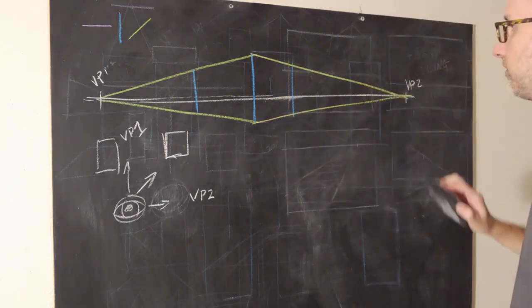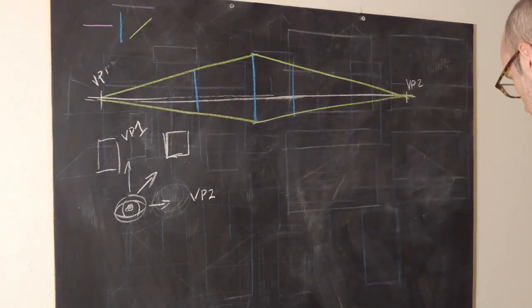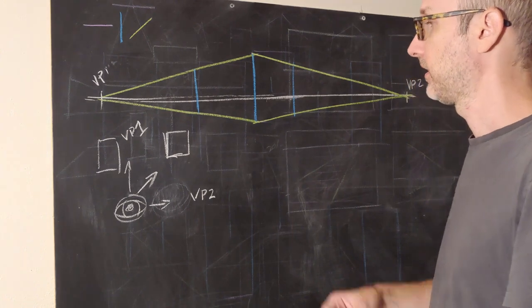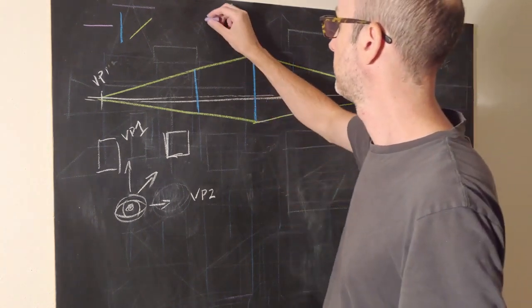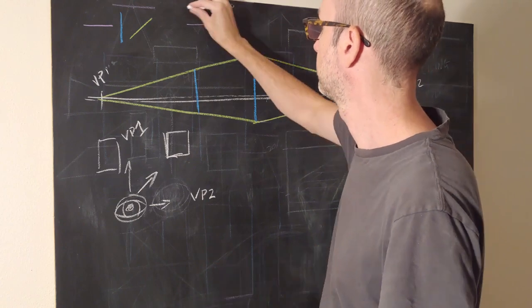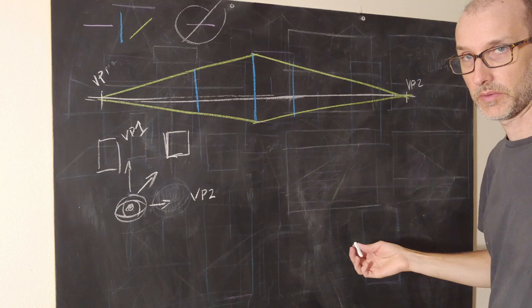So we've added the complexity of another vanishing point, but we've also simplified because now we no longer have to deal with horizontal lines. And the cool thing about two-point perspective is that in two-point, our horizontals are gone, for the most part, with exceptions.